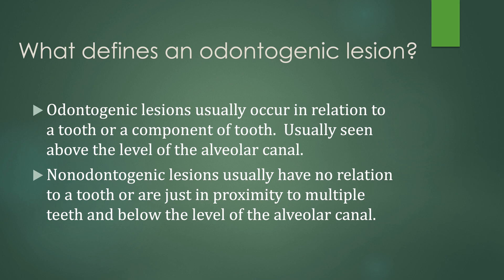So what defines an odontogenic lesion? Odontogenic lesions usually occur in relation to a tooth or a component of a tooth. These are usually seen above the level of the alveolar canal, whereas non-odontogenic lesions usually have no relation to a tooth, or are just in proximity to multiple teeth, and are below the level of the alveolar canal.